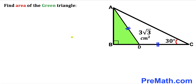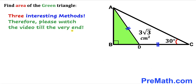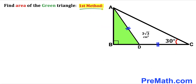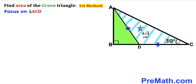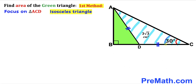Let's get started. I'm going to share three different approaches, so please watch the video till the very end. Here's our first method. Let's focus on the white triangle ADC. We can see that this is an isosceles triangle since AD equals CD, so therefore the base angles must be equal — both are congruent. If angle DCA is 30 degrees, then angle DAC is 30 degrees as well.